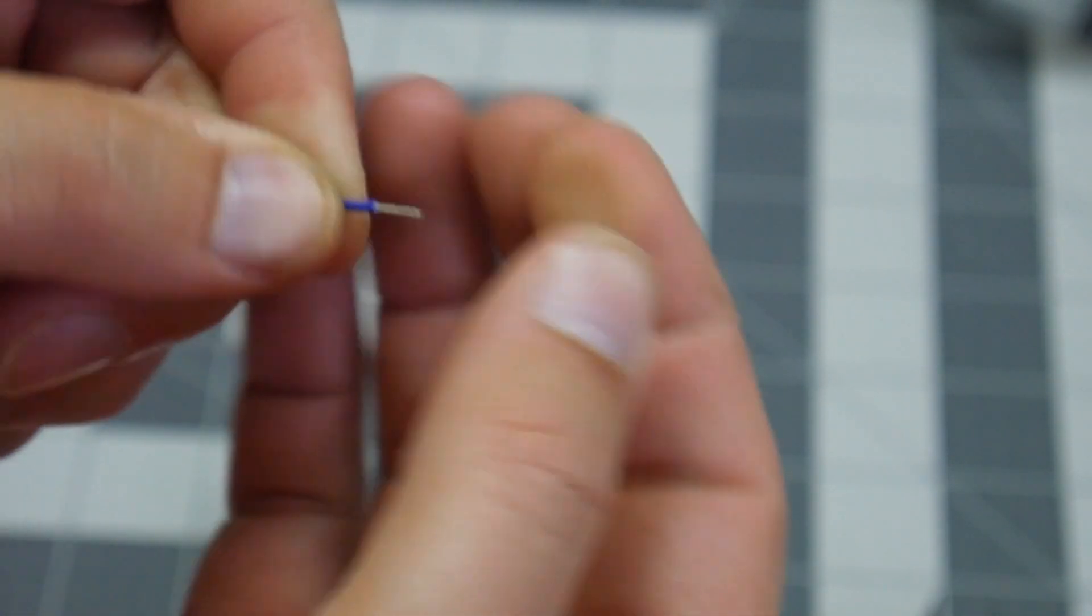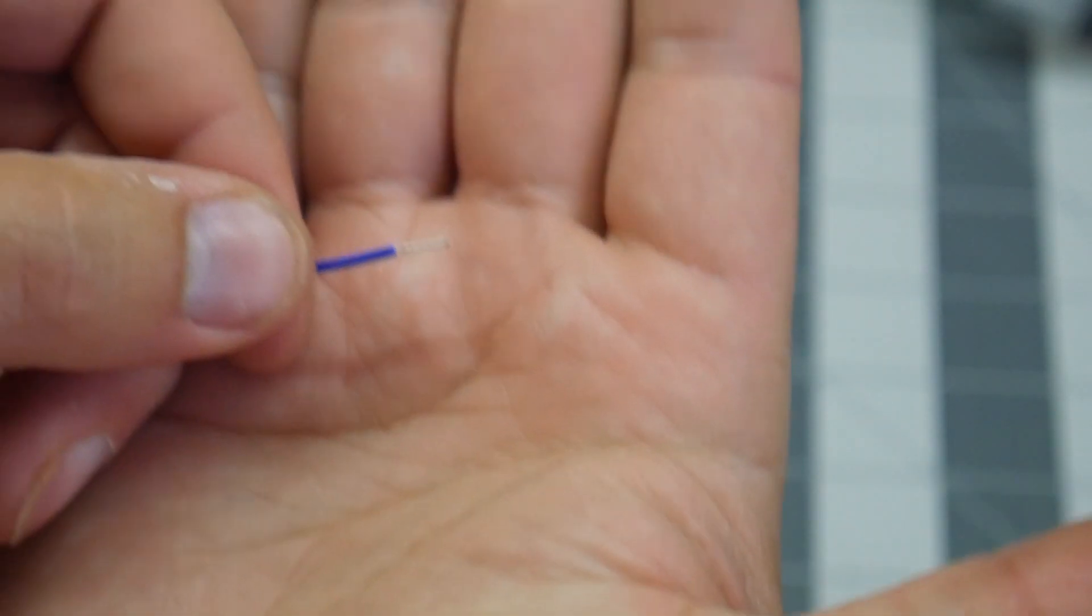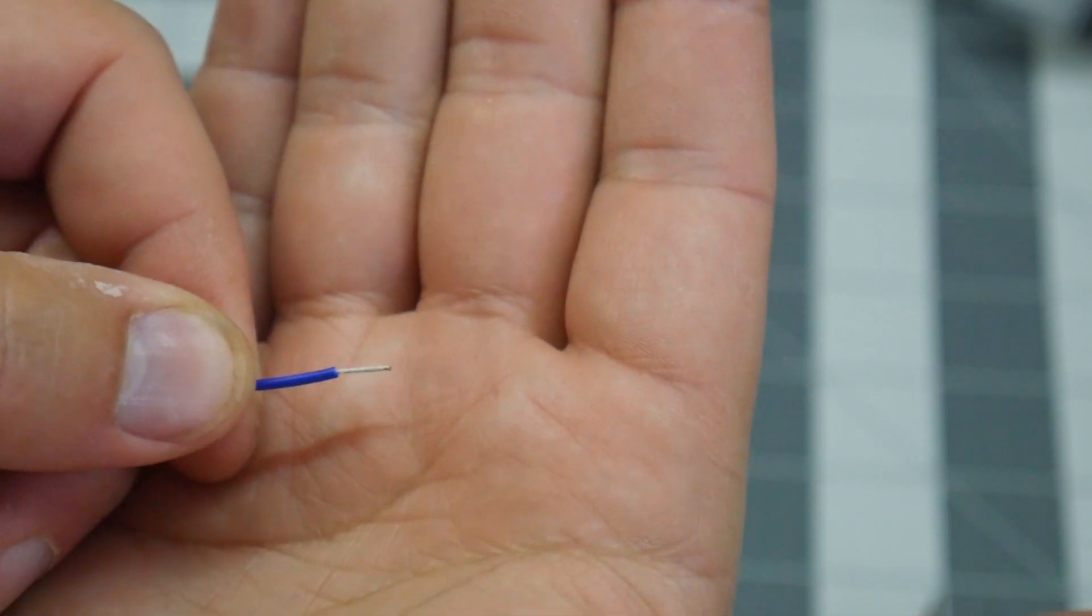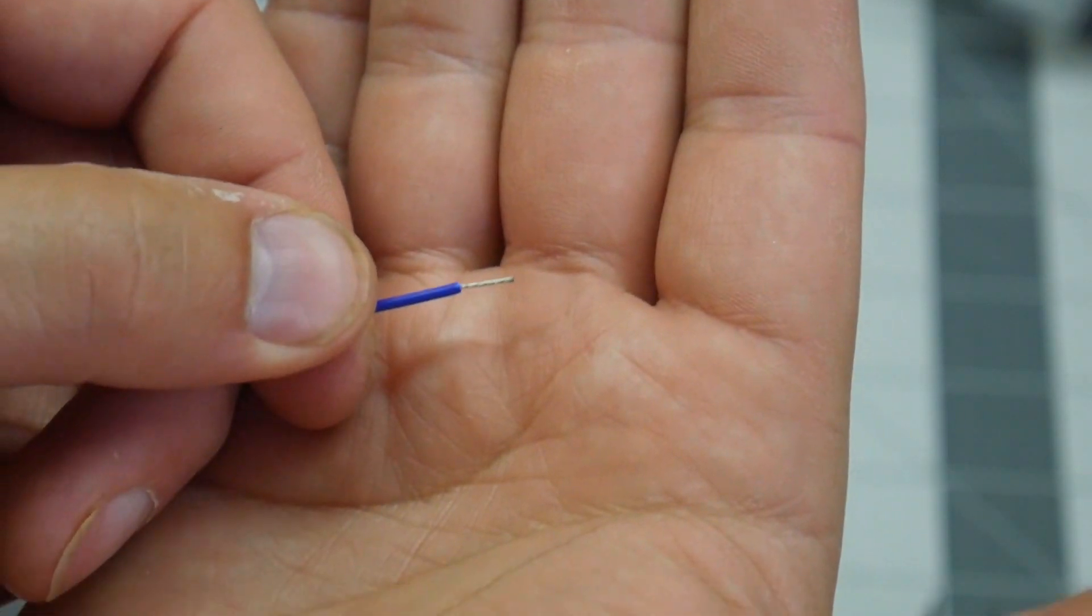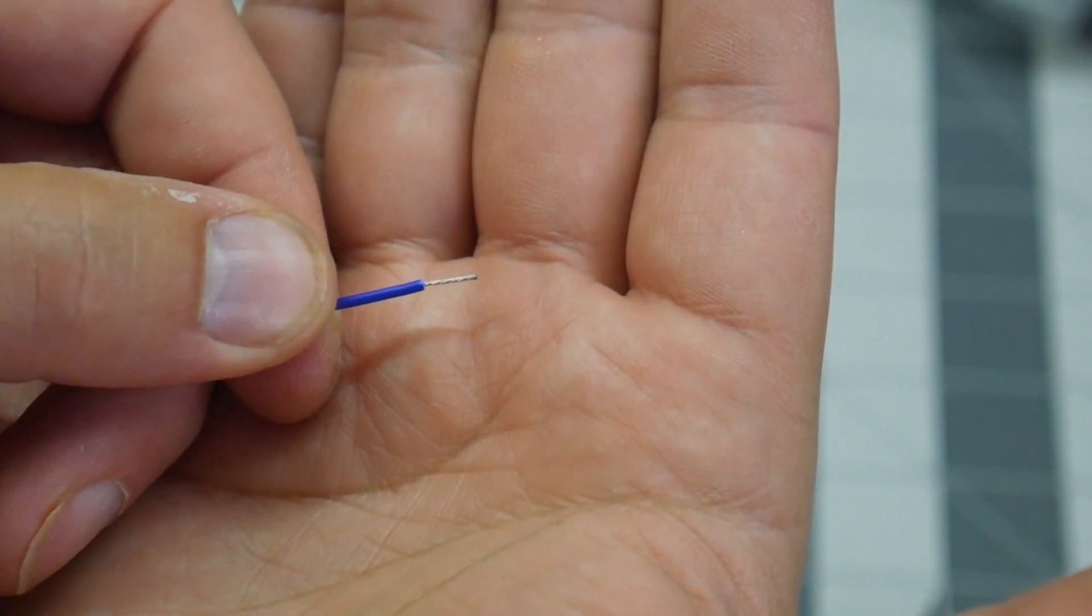You're going to give it a twist. Now depending on the gauge of wire you're using, you sometimes need to fold this over in order to get it in the connector.